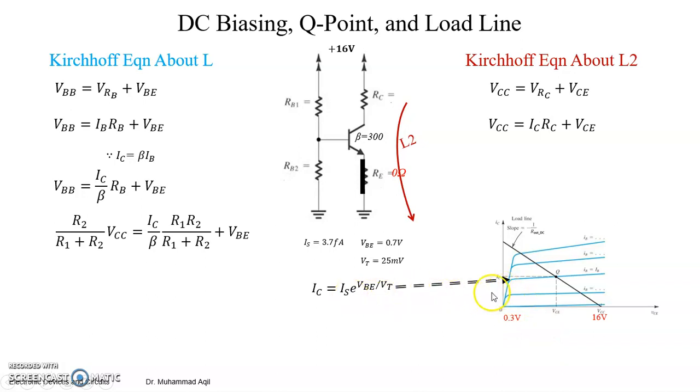But it gives you the value of IC, of course, for VBE is equal to 0.7 curve. So this is the 0.7 curve, right? But remember it has a slope. It means the IC value for all the points of this curve is not the same.